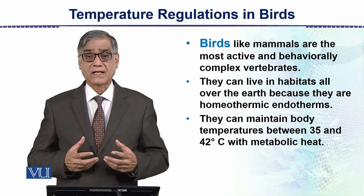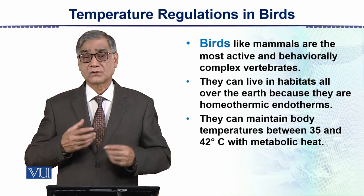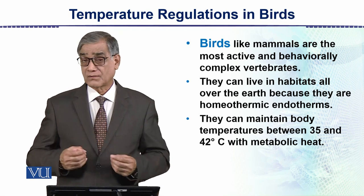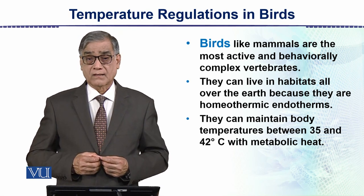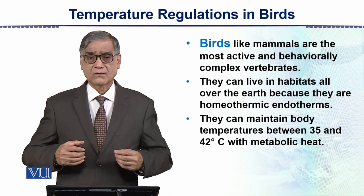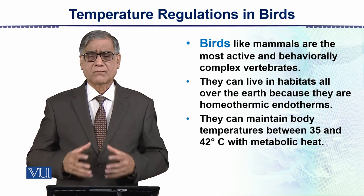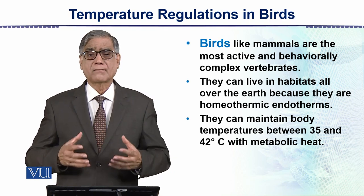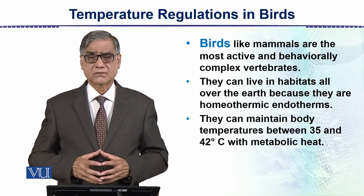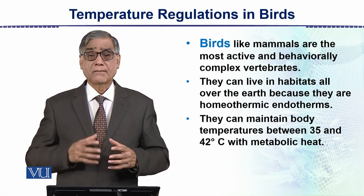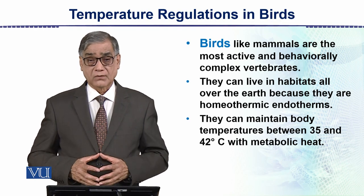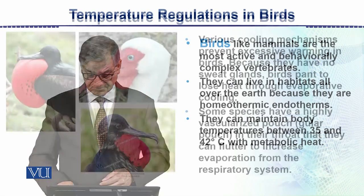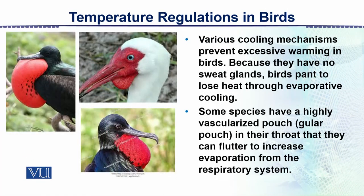Birds can maintain body temperature between 35 to 42 degrees Celsius with metabolic heat. This is how much heat is generated — it is all through metabolism. If visible accordingly, this metabolic rate is adjusted to maintain the body temperature.